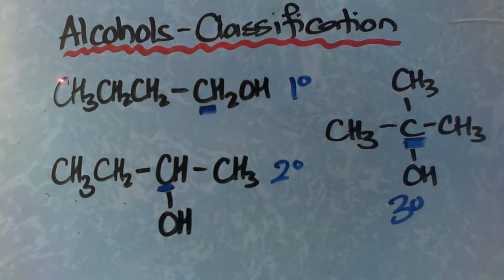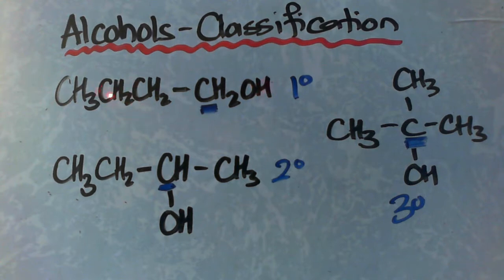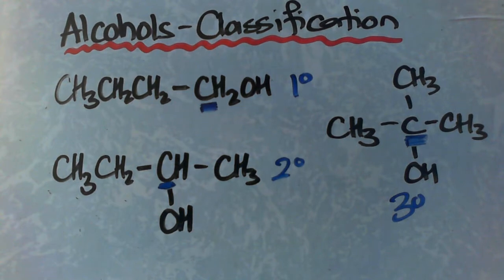So our first one here has got a largest carbon chain of one, two, three, four carbons. So it's called butanol.